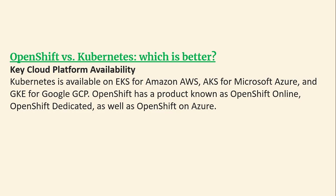Regarding cloud platform availability: Kubernetes is available as EKS on Amazon AWS, AKS on Microsoft Azure, and GKE on Google Cloud Platform. OpenShift has public products known as OpenShift Online, OpenShift Dedicated, and OpenShift on Azure.